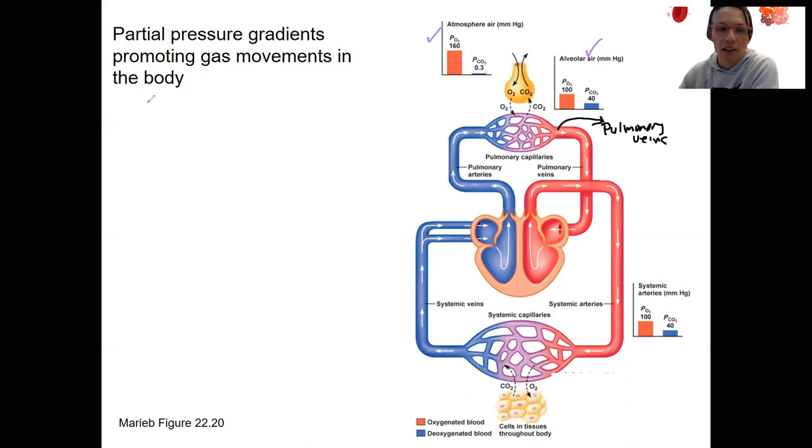That's a way of asking alveolar to pulmonary veins, and the partial pressure changes there are going to be the partial pressure change. Well, okay, I shouldn't say changes because they're not going to change. Looking at those two is going to be what occurs during external respiration.